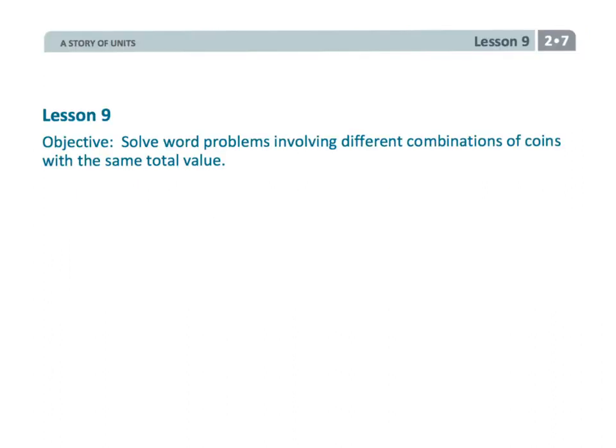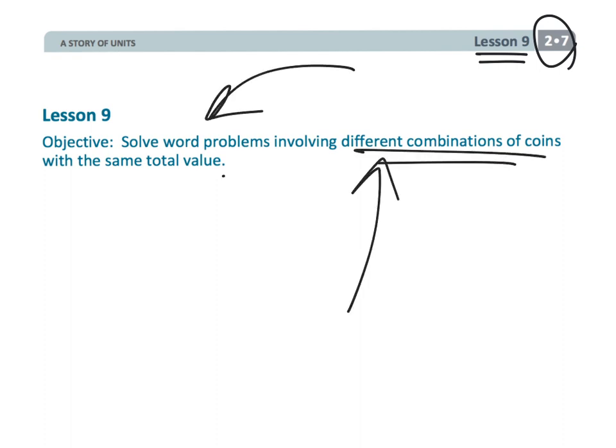That wraps up second grade module 7 lesson 9, word problems, but really we're talking about different combinations of coins that have the same value.